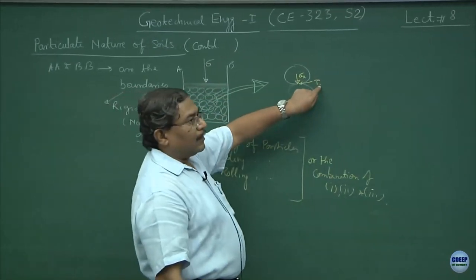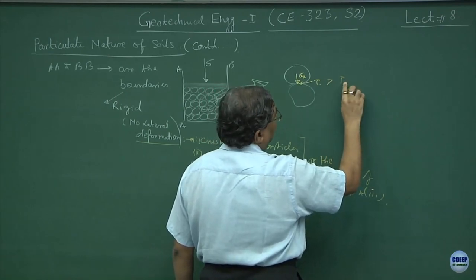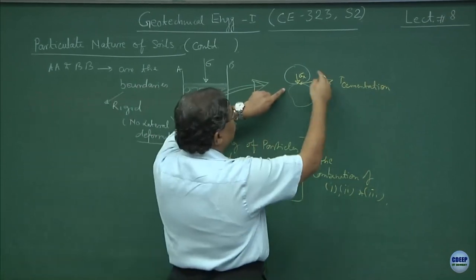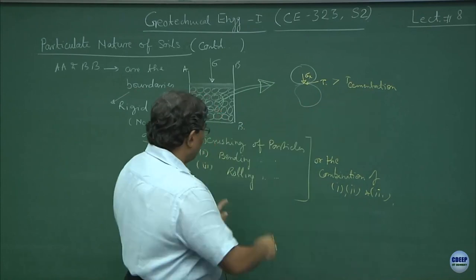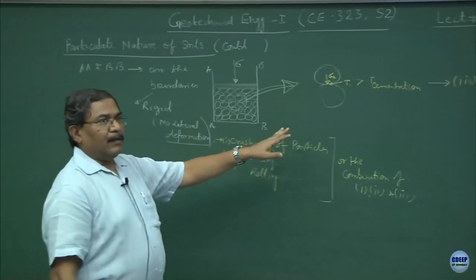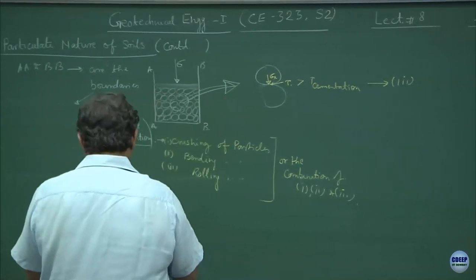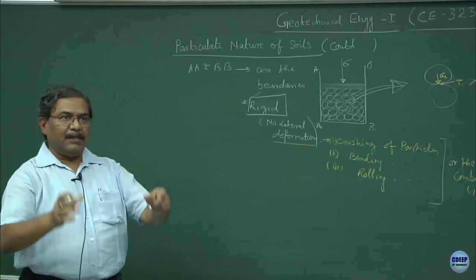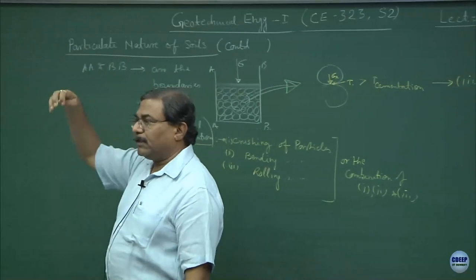The moment shear stress gets bigger than the binding stress — what we call cementation surrounding the particles — the moment tau is greater than tau cementation, rolling occurs (mechanism 3). However, this is going to be very minor because the boundaries are rigid. In most situations, the chances of boundaries being rigid are extremely less unless you are working in a casing system — for example, bridge piers where you fill a cylindrical portion with sands and then let the bridge foundation sit over it.